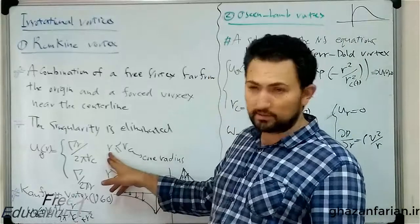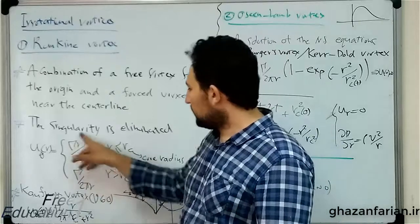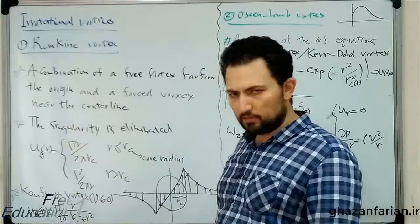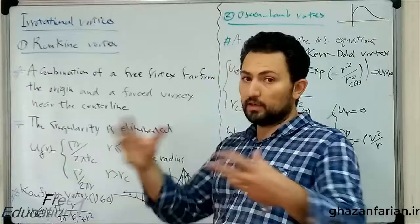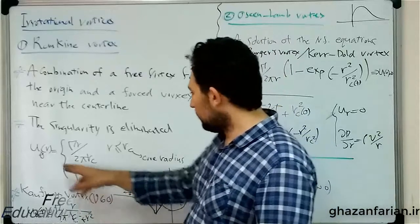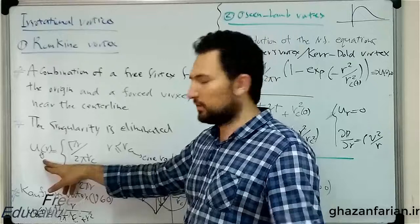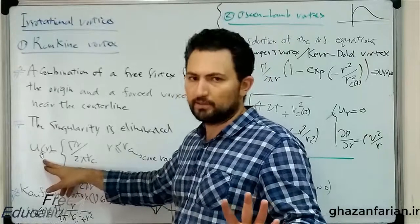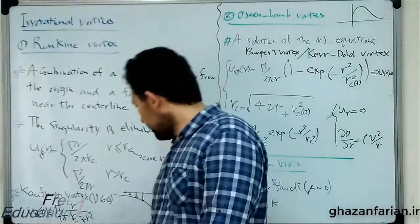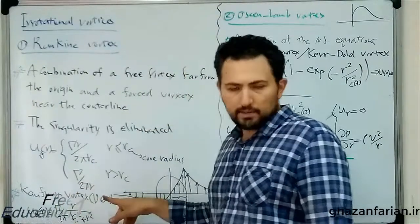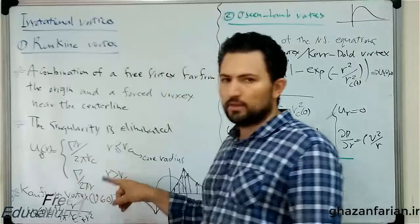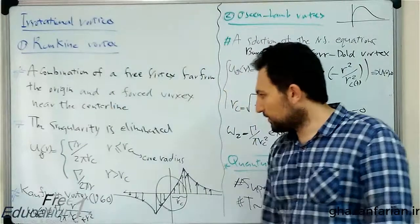This radial distance is less than the core radius. This is the linear distribution of velocity from the forced vortex. For greater values outside the core region, this is exactly the potential vortex or free vortex. The radial velocity is zero in all vortices, and we have only the circumferential velocity component.